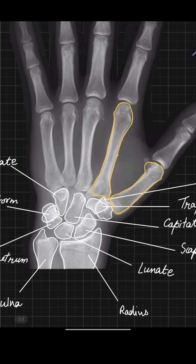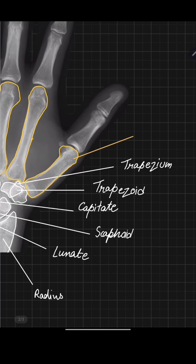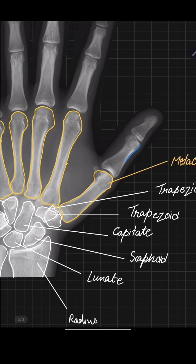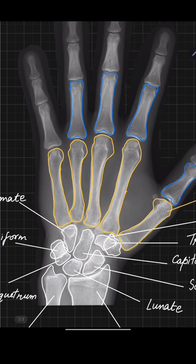Now you can see the metacarpals. These are the long bones which connect the carpal bones to the fingers. You can see this yellow coloring applied to the metacarpal bones.